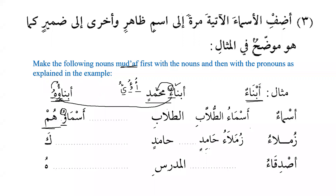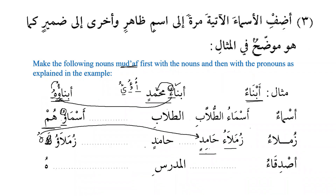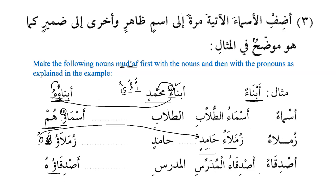زملاء حامد — the classmates of Hamid — and then زملاؤه — his classmates. We use هو for Hamid (third person singular masculine). Note: we cannot use your (ك) here because we are talking about Hamid's classmates, not yours. Similarly: مدرسو and أصدقاؤه — his teachers and his friends. Alhamdulillah, this has been lots of practice.